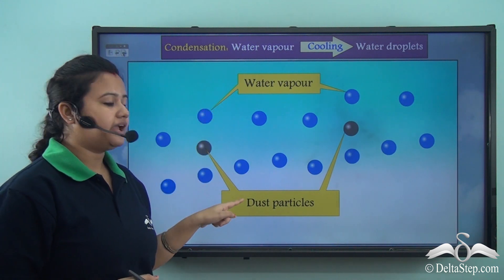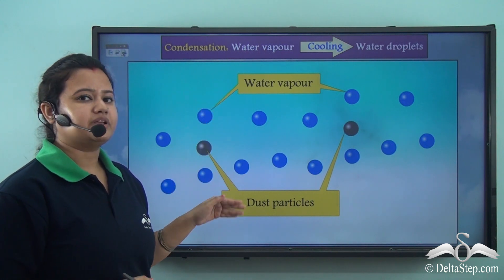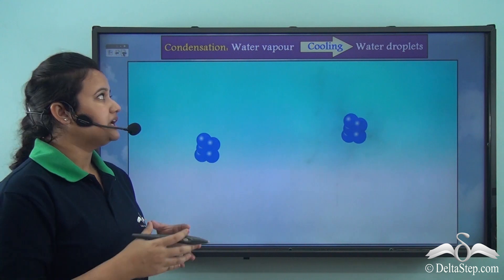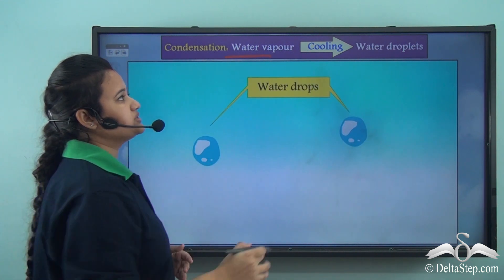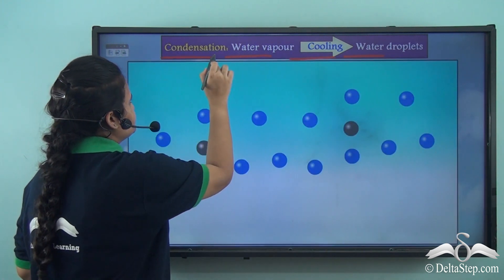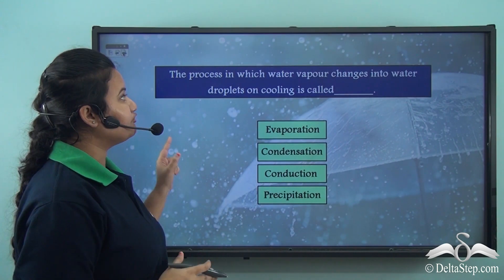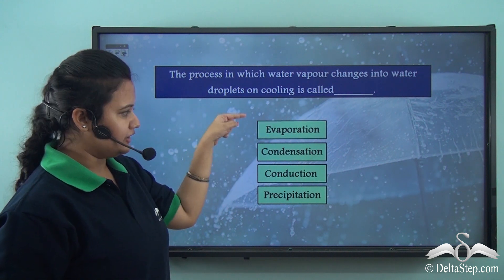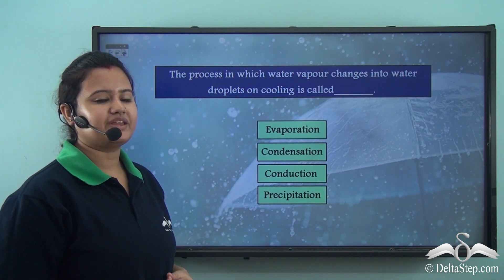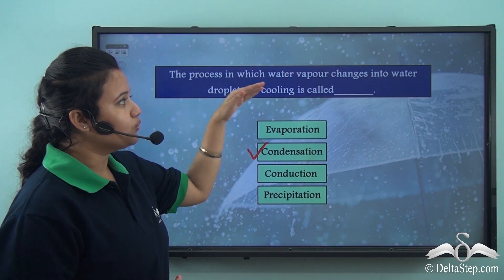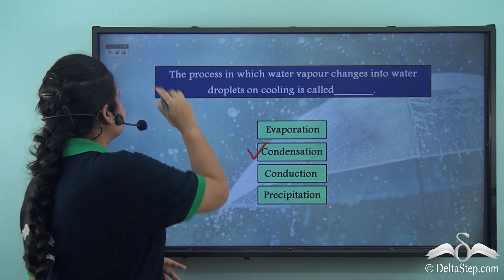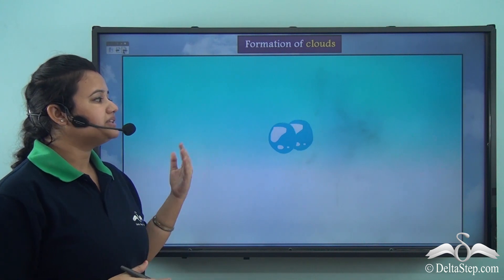Apart from water vapor, air also contains dust particles. These two elements combine — specifically, water vapor condenses around dust particles to form water drops. The process by which water vapor transforms into water droplets on cooling is known as condensation. Let's check: the process in which water vapor changes into water droplets on cooling is called — evaporation, condensation, conduction, or precipitation? The correct answer is condensation.